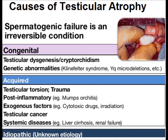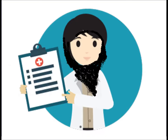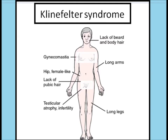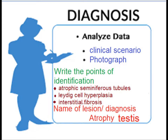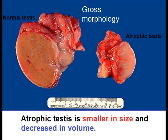Congenital causes are usually presented at an early age. A patient with a genetic abnormality — Klinefelter syndrome — will present with lack of body and head hair, gynecomastia, and infertility. On biopsy, there will be atrophy of the seminiferous tubules. When analyzing the clinical scenario and photomicrograph, the points of identification are: atrophic seminiferous tubules, Leydig cell hyperplasia, and interstitial fibrosis. The diagnosis is atrophic testes.